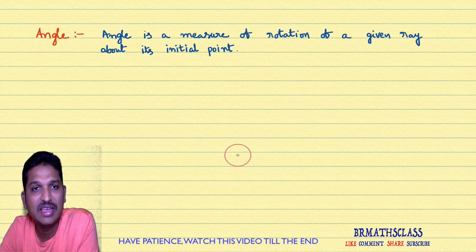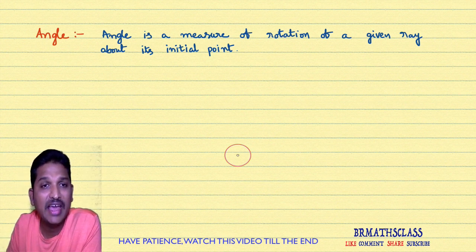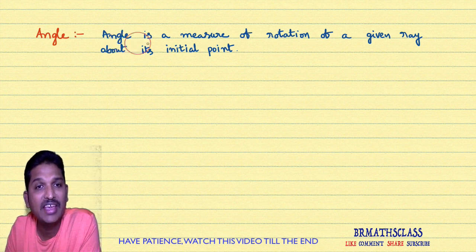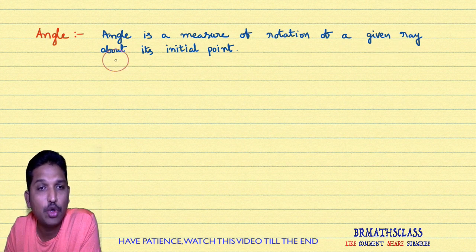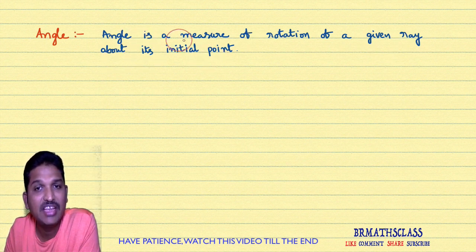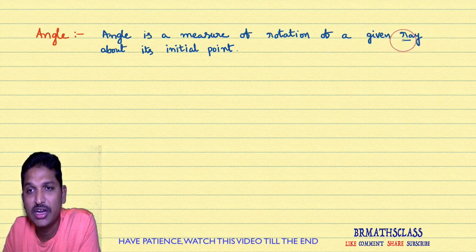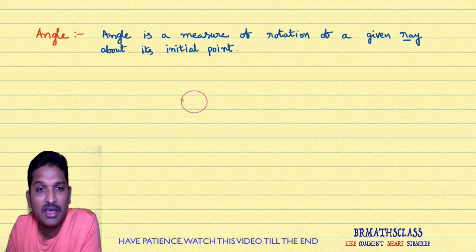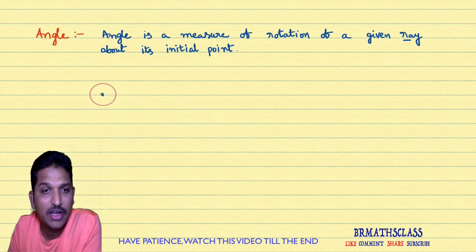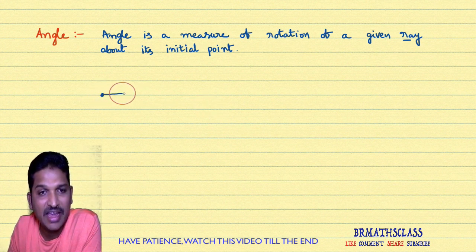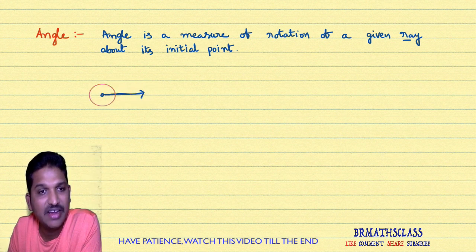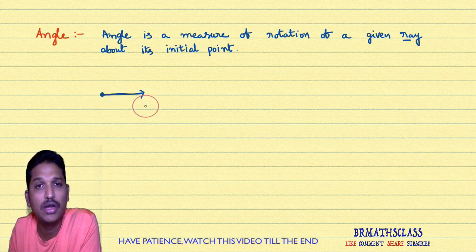First, we will see the definition of angle. What is angle? Angle is a measure of rotation of a given ray about its initial point. First, you need to know what is a ray. I will draw a ray. A ray is like a line which has only one initial point. It is having only one end point, and then it is called a ray.